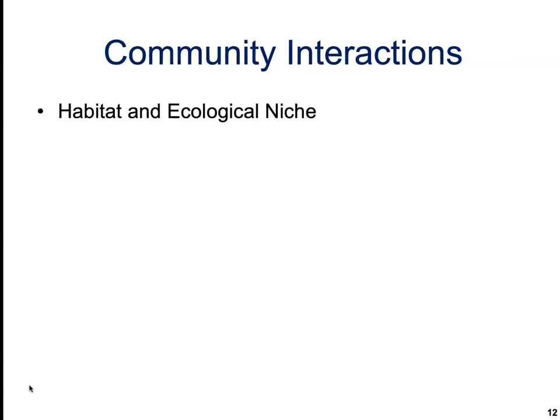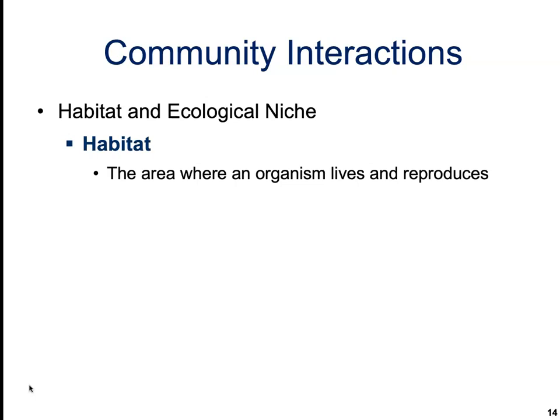Community interactions include things like the habitat and ecological niche. The habitat is going to be the area where an organism lives and reproduces. The ecological niche, on the other hand, is going to be the role that a species plays in its community. This includes the methods that a species uses to meet energy, nutrient, and survival demands.